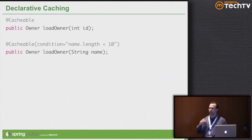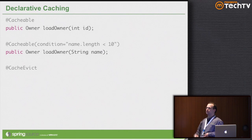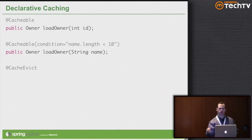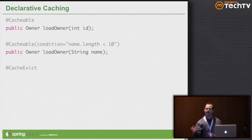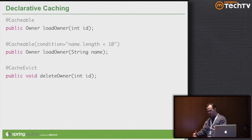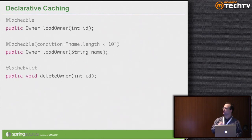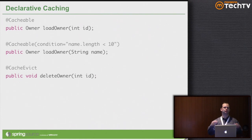For every time you put an object in the cache, there's a useful scenario where you want to take the object out. @CacheEvict tells Spring that whenever somebody calls this method, you want to delete the corresponding entry in the cache — evict it. You've got support for caching and uncaching based on the same key resolution algorithm. The parameters to the method become the key used to look up and delete the object.